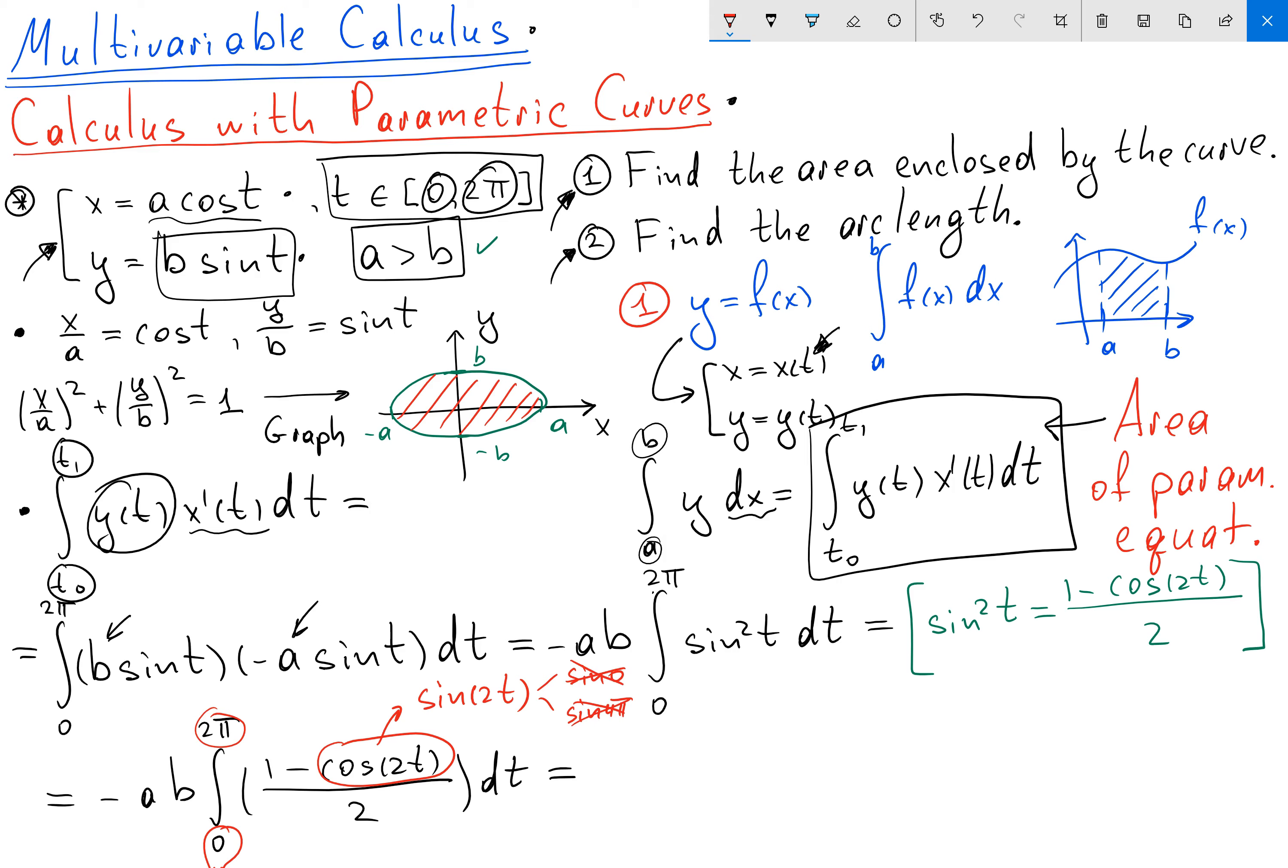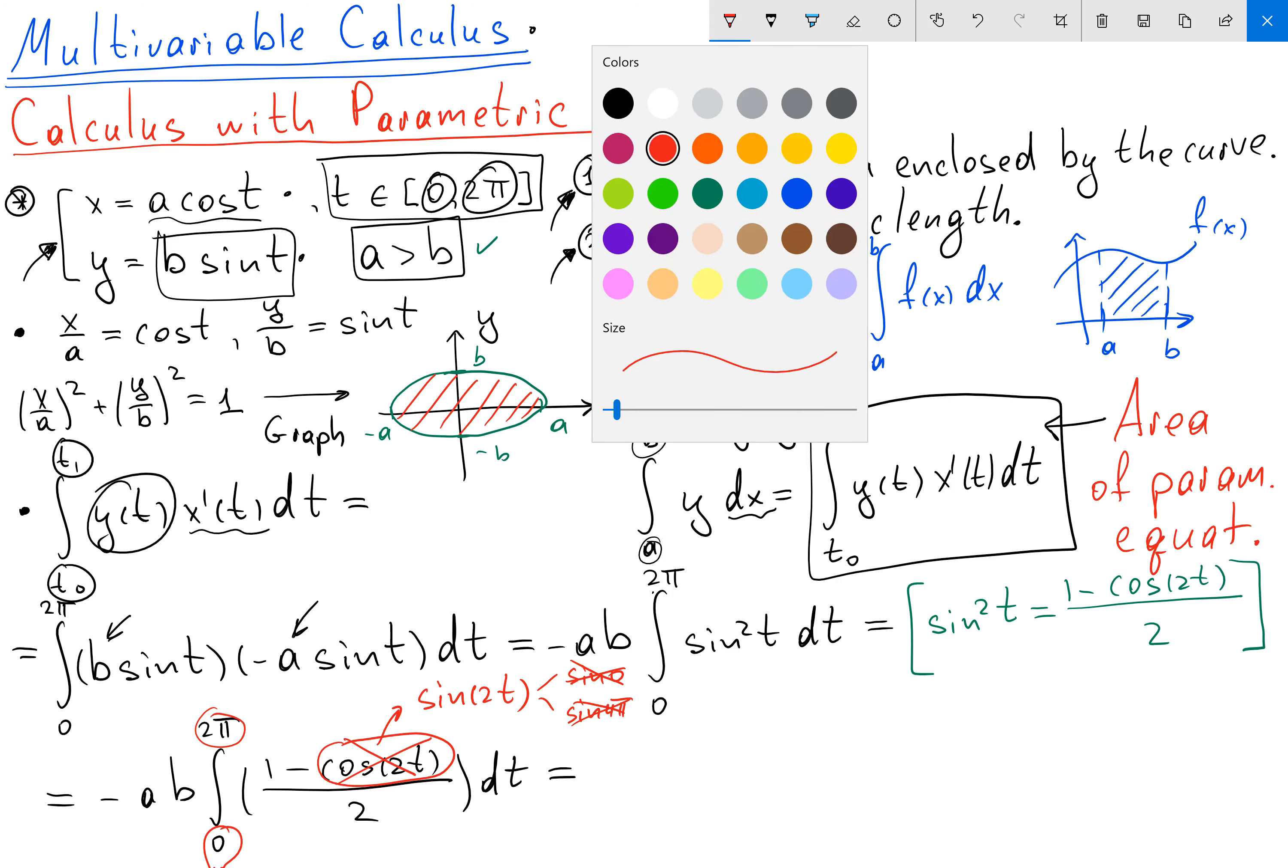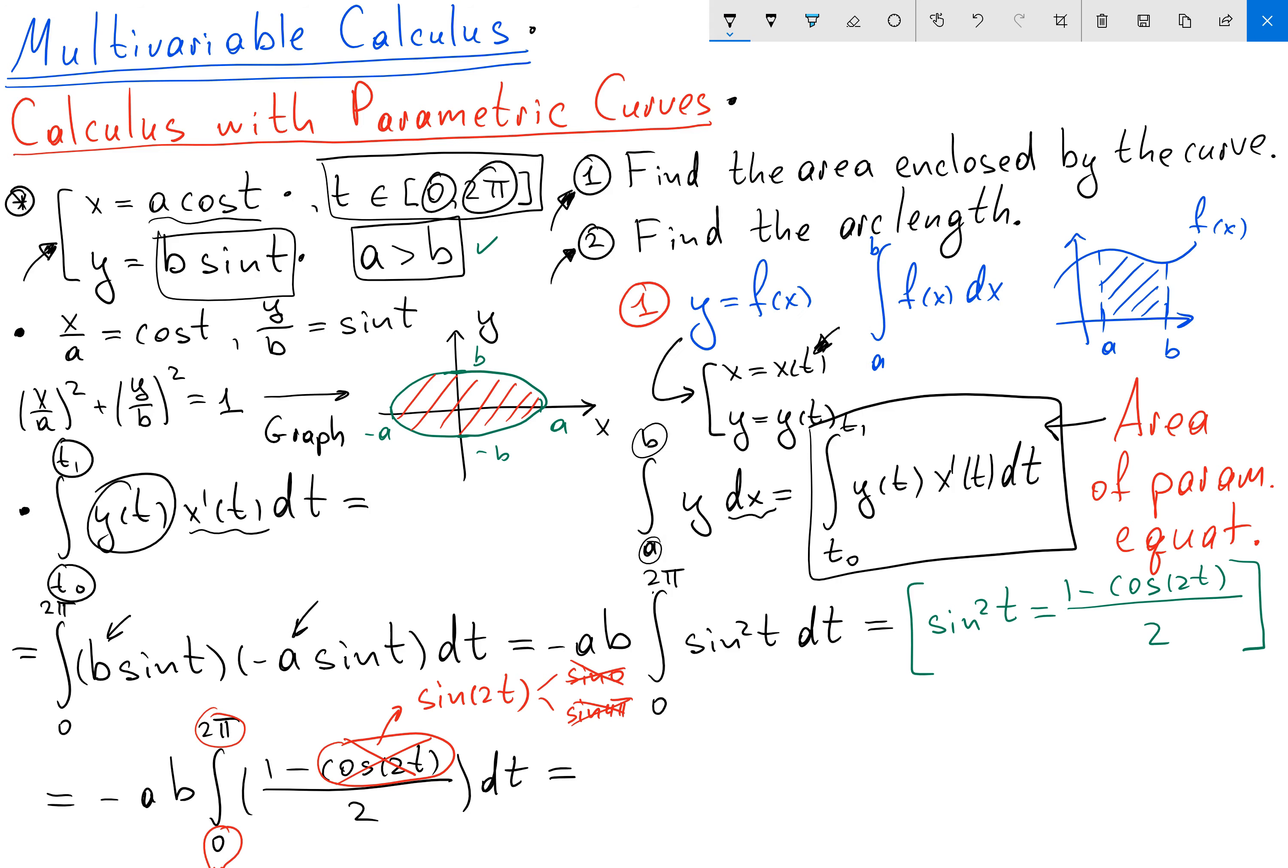So basically when I'm going to find the integral of my function, this term is going to be equal to 0. So the only term which is going to give us non-zero is going to be 1 half. In that case, my integral minus ab is going to be just 1 half t when t changes from 0 to 2π. And after you plug it in your formulas, you can see that our integral is going to be actually equals to minus π ab.